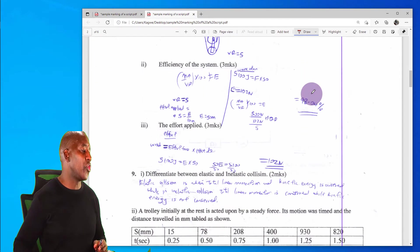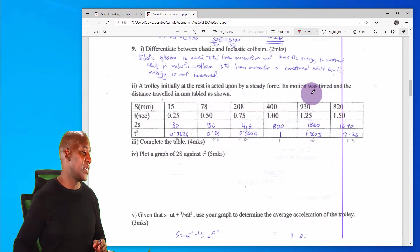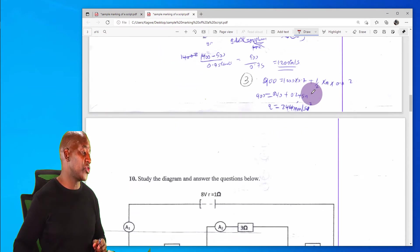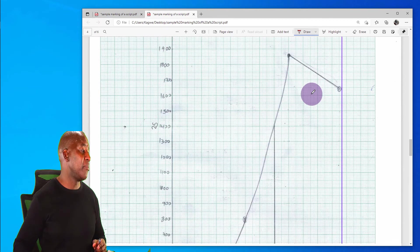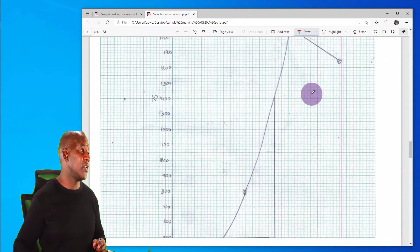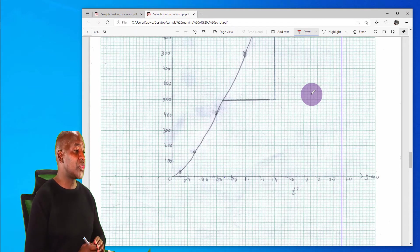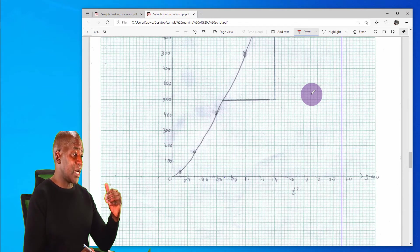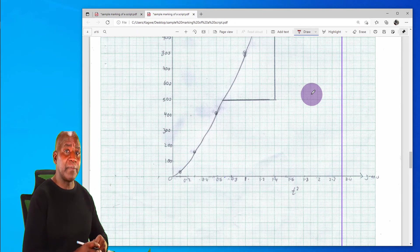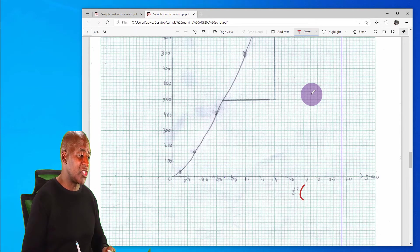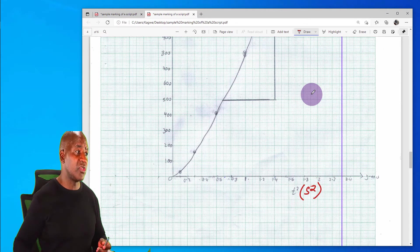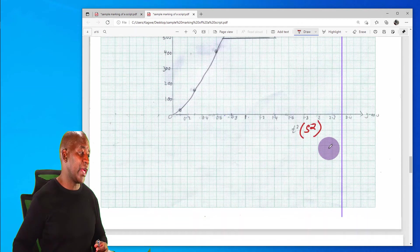Even in situations where I have maybe a graph, you can see the student has presented this graph and it is so clear once it is scanned. It appears very clear and I'm able again to mark this work for the students and even be able to make simple corrections where I feel the student is not getting the answer correct.